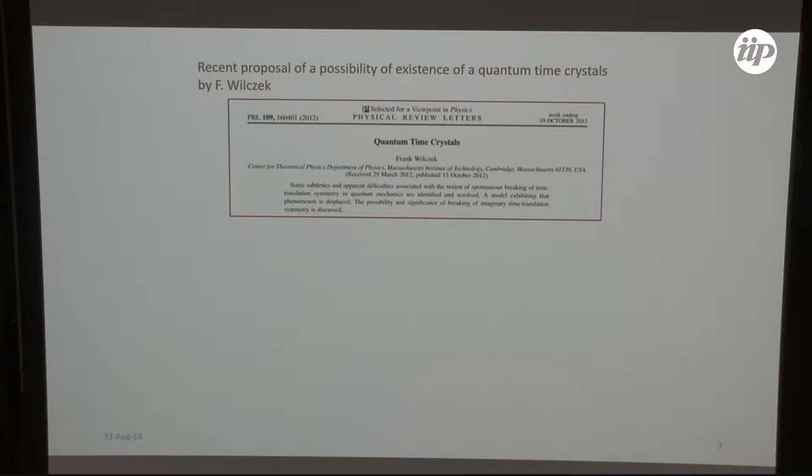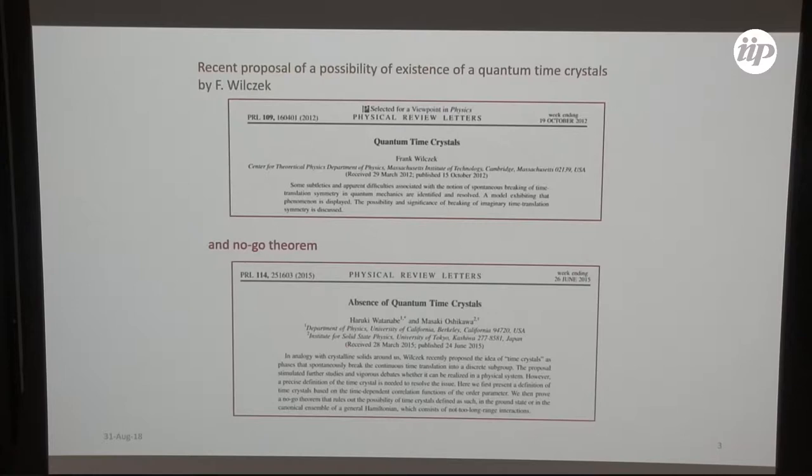He was immediately criticized by people who calculated in his model the thermodynamically stable state and it was homogeneous. The state proposed by Wilczek was not the thermodynamically stable state.